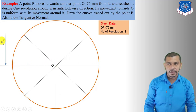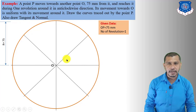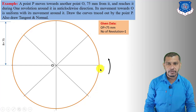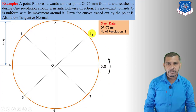The rotation of the line is in the anticlockwise direction and the number of convolutions is one. Starting from the initial point in the anticlockwise direction, give the numbering on the circle: for one convolution it is equal to 360 degrees, so number in anticlockwise direction: 0, 1, 2, 3, 4, 5, 6, 7, and 8.